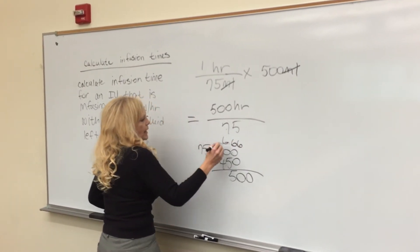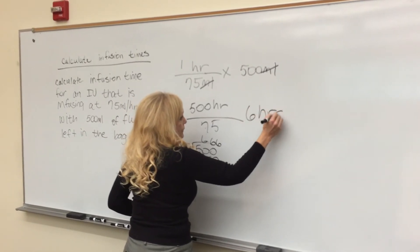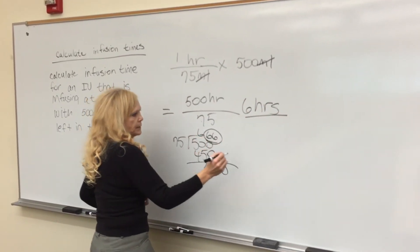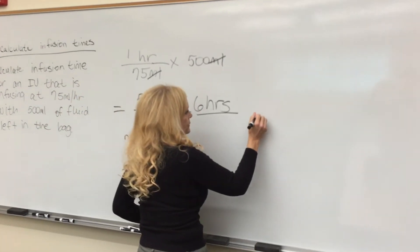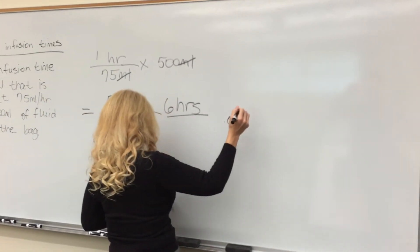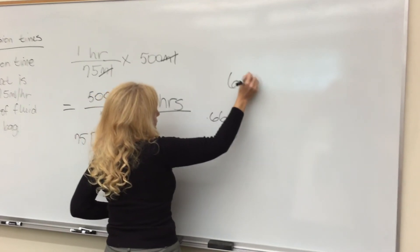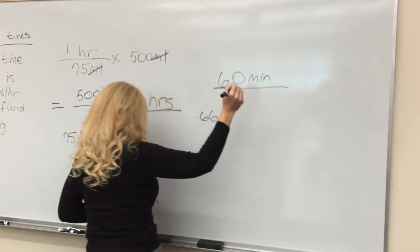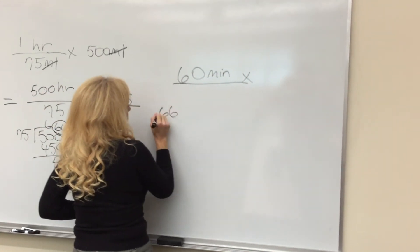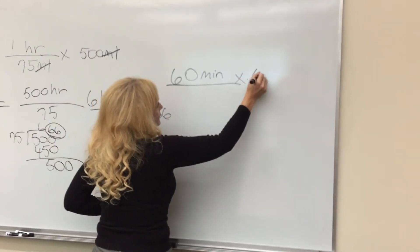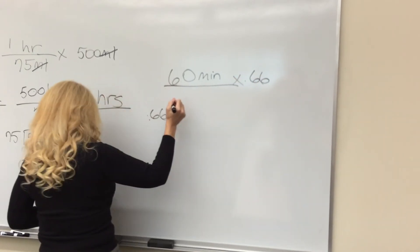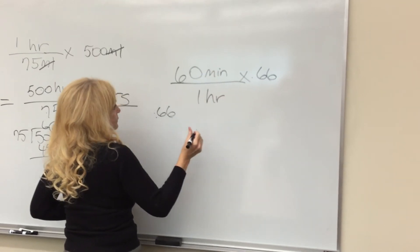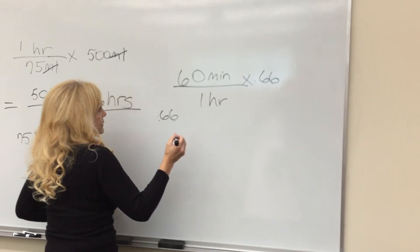In order to calculate minutes, we have to take the 0.66. We have 0.66, we'll put it here. What we need to do next is 60 minutes times 0.66 over one hour, because one hour is 60 minutes.